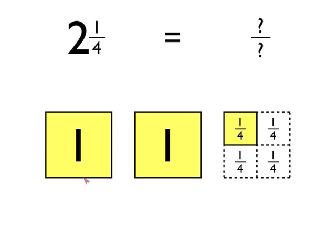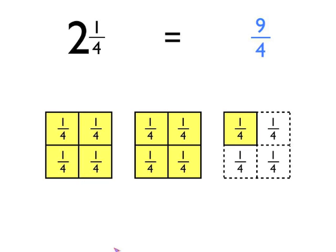So what you do is you split those whole squares up into quarters, as you can see here. And then once you get to this stage, you can literally just count how many quarters you've got. I've got four quarters in each of the whole squares and then an extra one quarter.